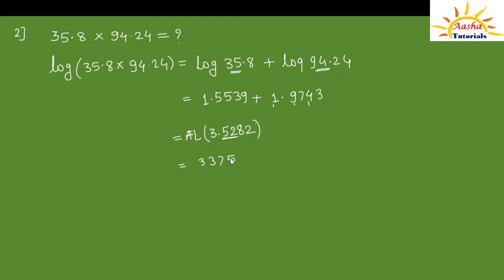The characteristic value is 3; adding 1 gives positive 4, so we write the decimal point after 4 digits: 1, 2, 3, 4. The final answer for 35.8 × 94.24 is 3375.